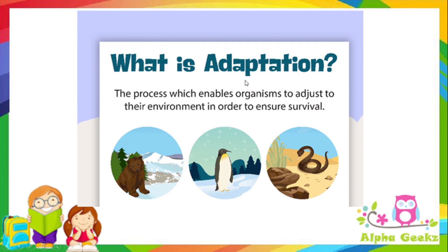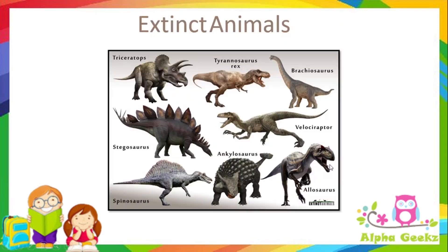As we have seen, animals need to protect themselves from harsh weather conditions, from their enemies, and they also need to find their food. For this they need to adapt or adjust themselves to different environmental conditions. This process of developing special features in order to adjust to changes in the environment is called adaptation.